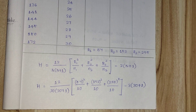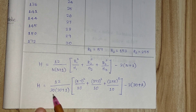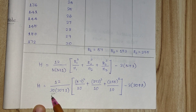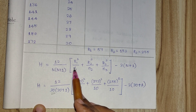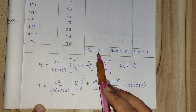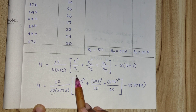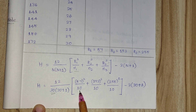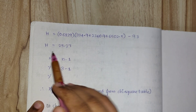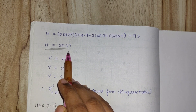Now we substitute directly into the H formula. We have N equal to 30 total values from 3 samples, so 30 into (30 plus 1). Since there are 3 ranks, we include three rank terms in the formula. For the first rank sum: 57 divided by n1, where Sample 1 has 10 data points, so N1 equals 10. After solving, the calculated H value comes out to 25.27.